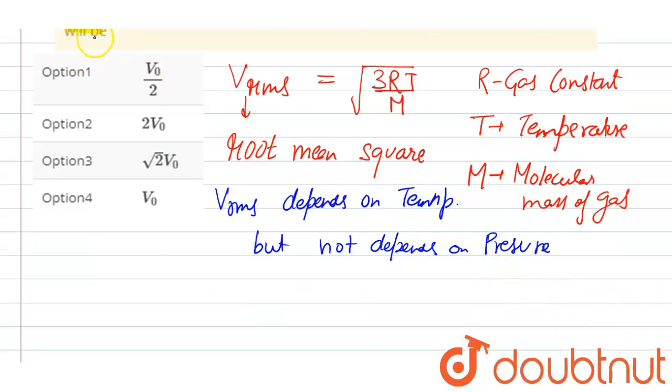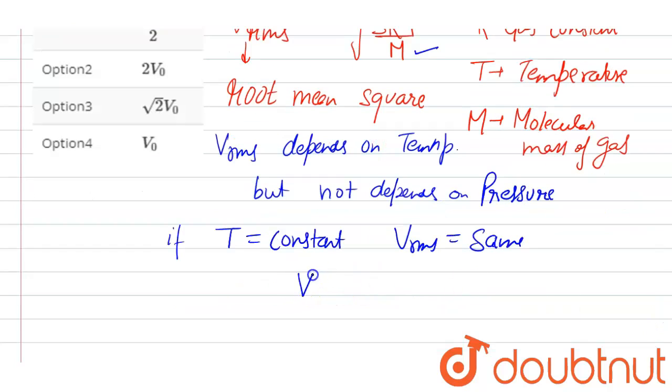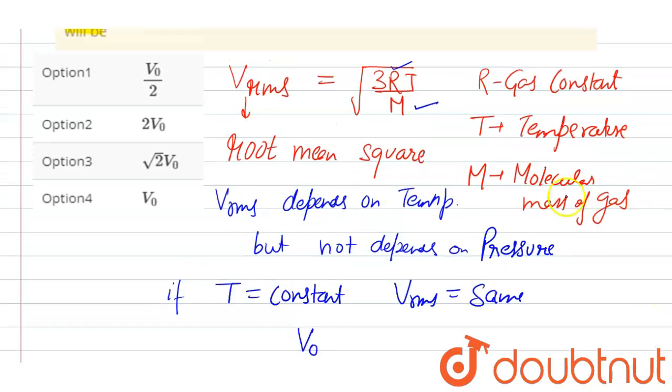So that means if temperature is constant, then RMS speed will be same, because the other quantities R is also constant, M is also constant. So that means the RMS speed will remain same, that is v naught, which means that option fourth is correct. Thank you.